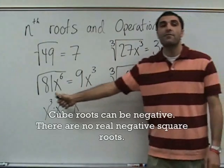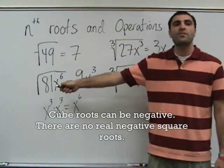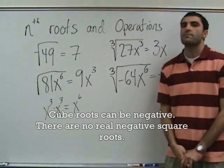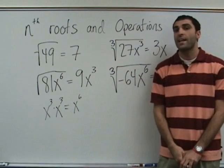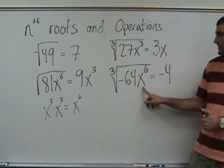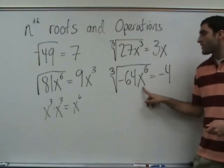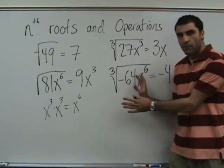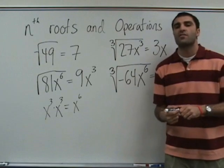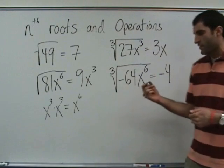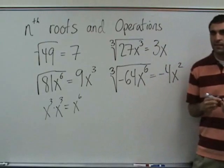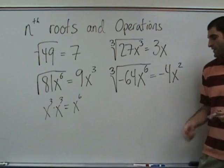Can you have square roots of negative numbers? No. Because when a negative times a negative would be a positive — so you can't have a negative square root. The cube root of x to the 6 is x squared. Questions about this? X squared.